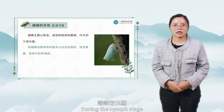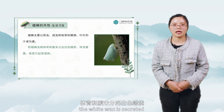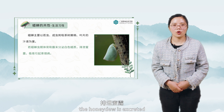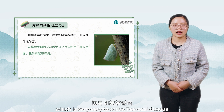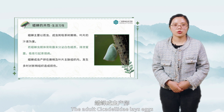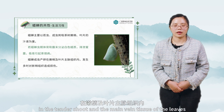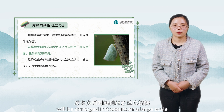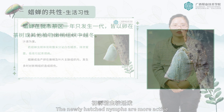During the nymph stage, the white wax is secreted on the body back and abdominal end. The honeydew is excreted, which is very easy to cause tea sooty disease. The adult cicadilidae lays eggs in the tender shoot and the main vein tissue of the leaves. The new tissues will be damaged if it occurs on a large scale.